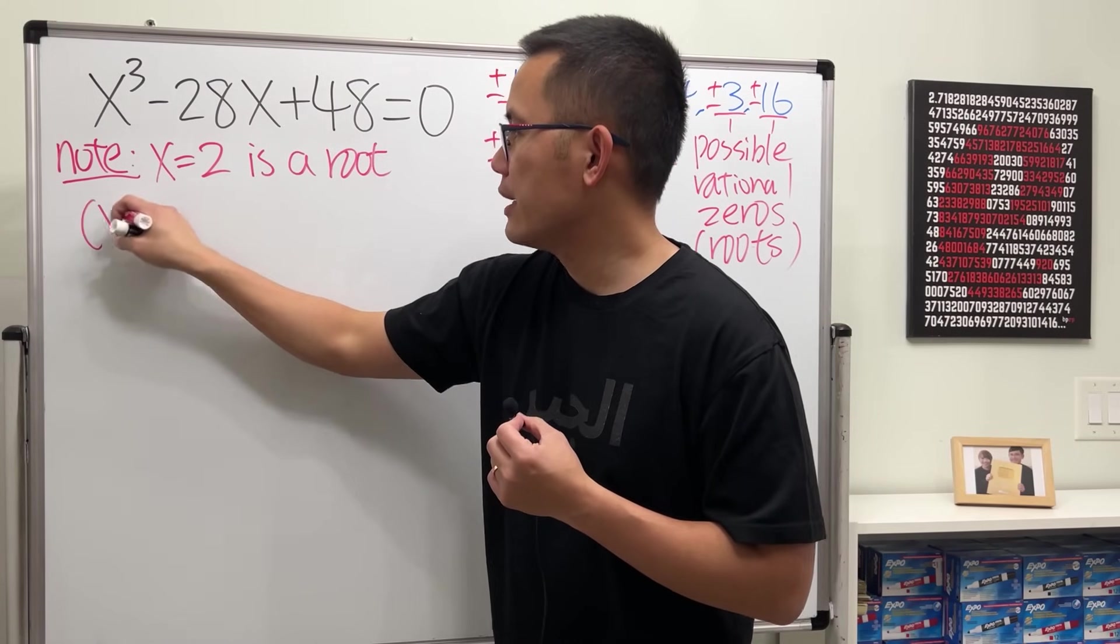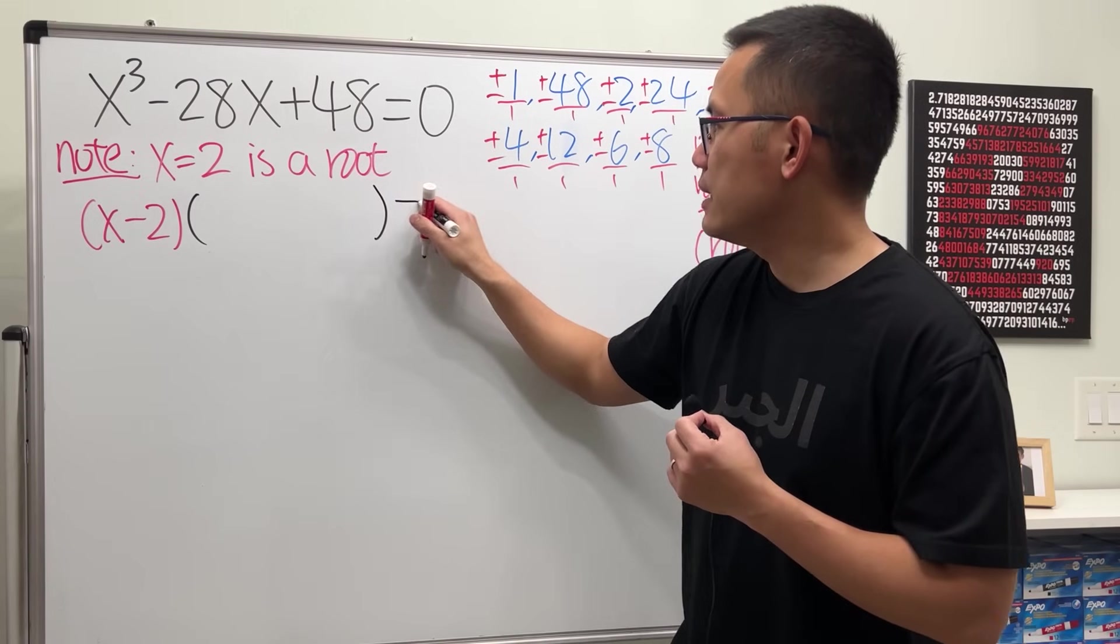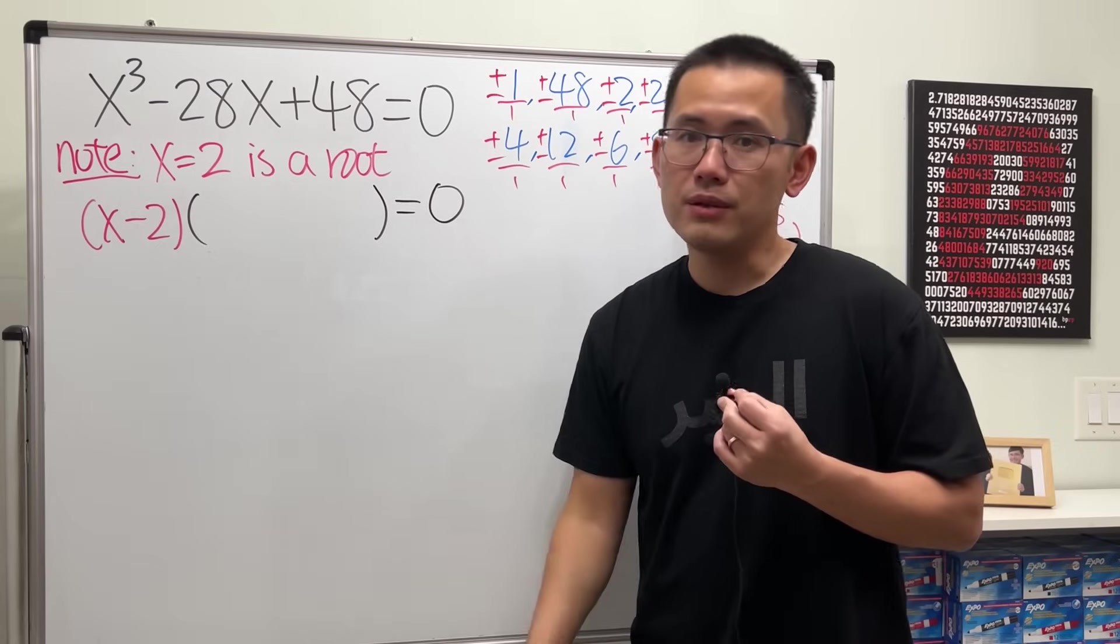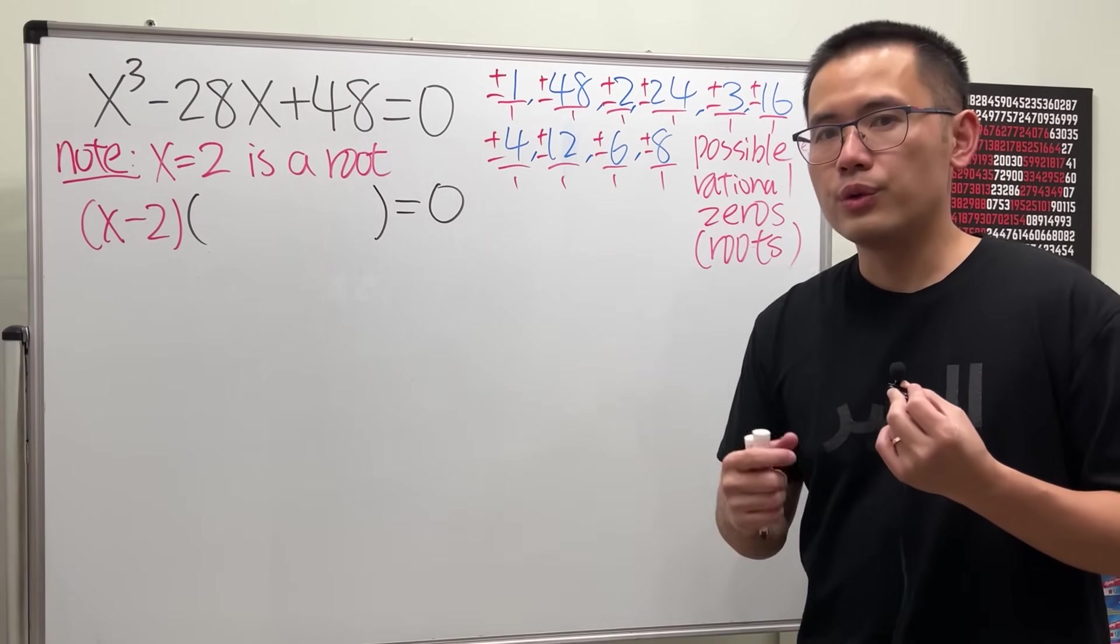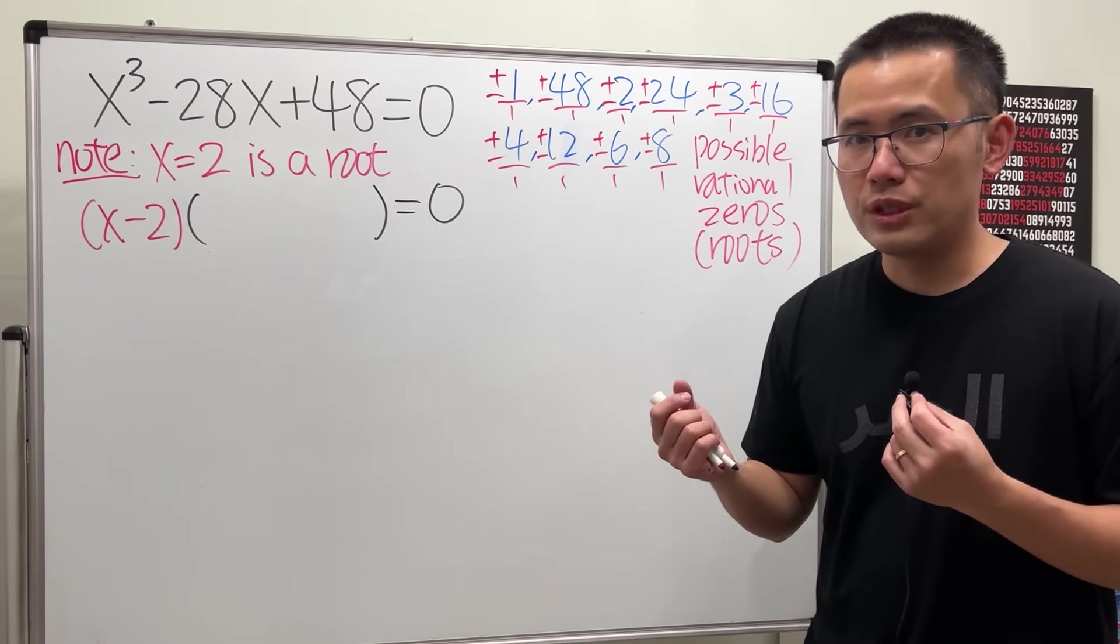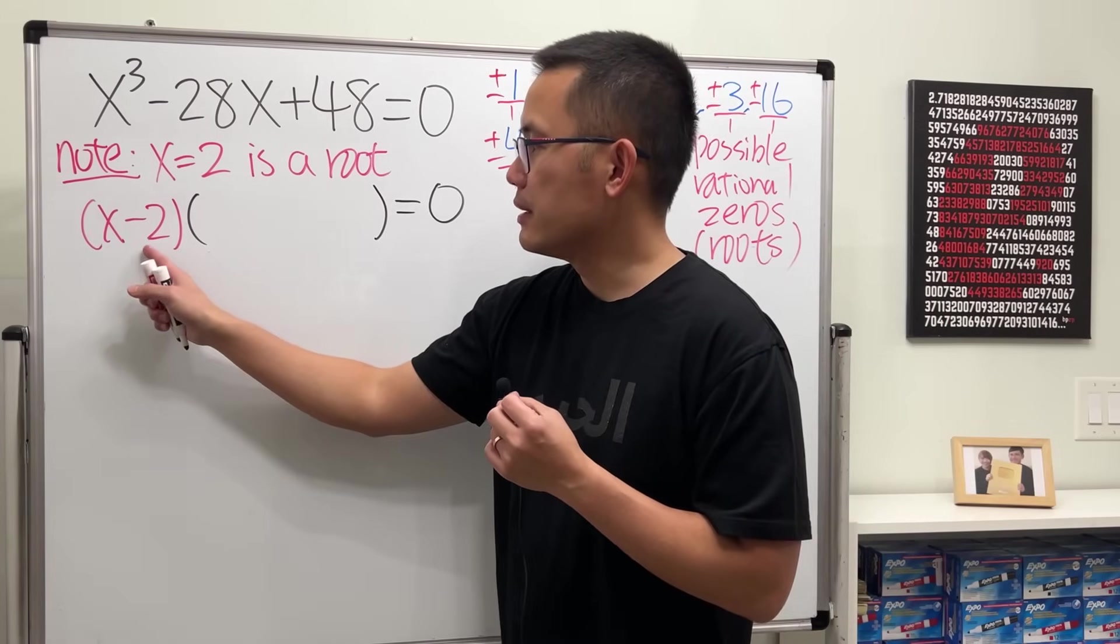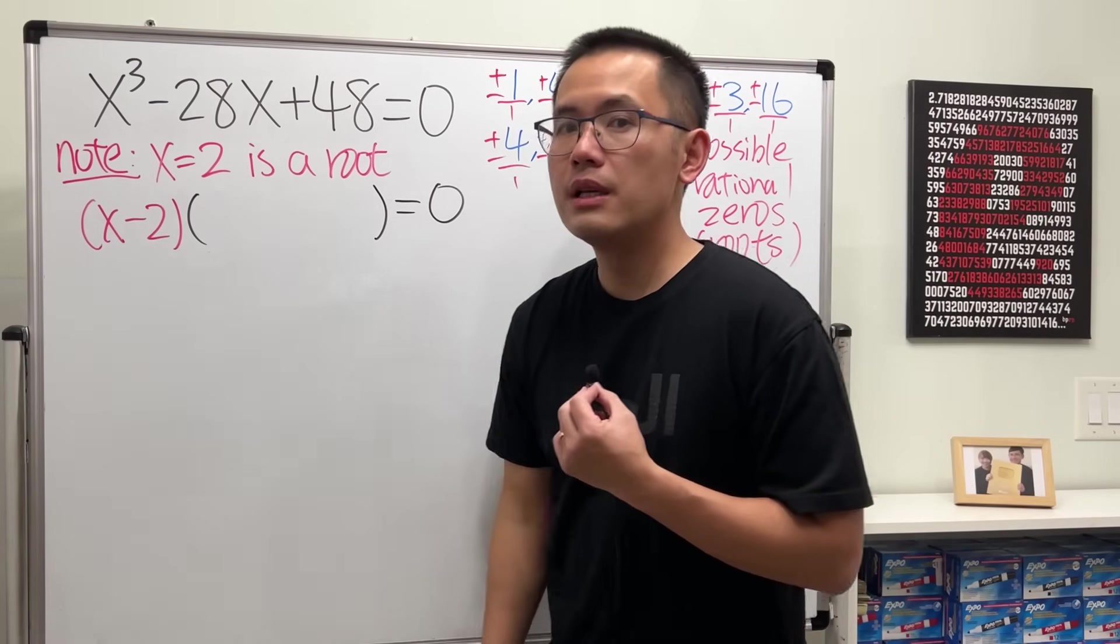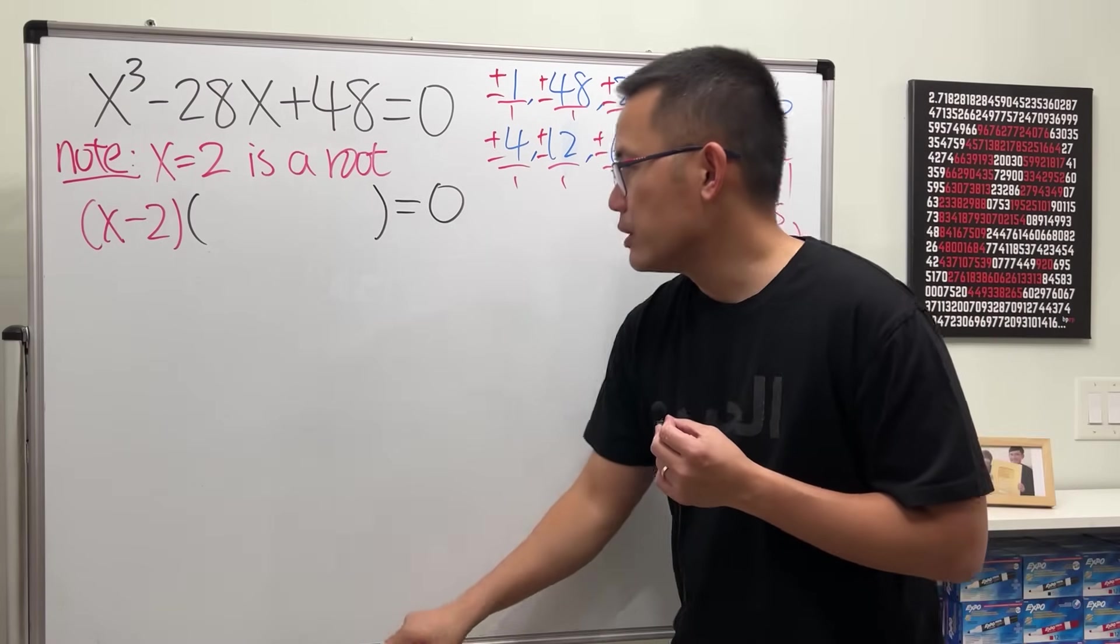So what this means is right here you can factor this cubic equation with x minus two. Have a look. I'm going to write down x minus two and then times another factor, and hopefully we'll be able to figure this out. And to factor this, we can use the so-called synthetic division, or if you would like, you can also do the polynomial long division.